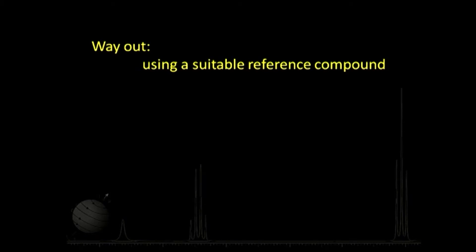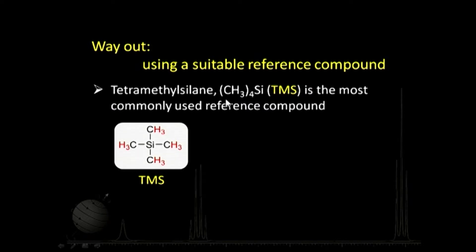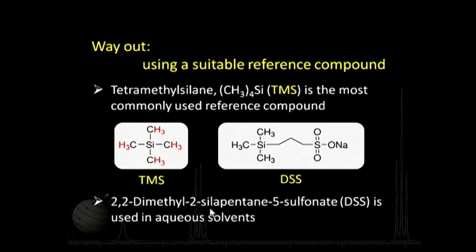The way out is to use a suitable reference compound. Most often we use TMS — tetramethylsilane — as a reference compound. Its structure has 4 methyl groups attached to a silicon atom. Another example is DSS (2,2-dimethyl-2-silapentane-5-sulfonate), which is used for aqueous solvents. TMS is used for all non-aqueous solvents like CDCl3 or DMSO, while DSS is used for aqueous solvents.